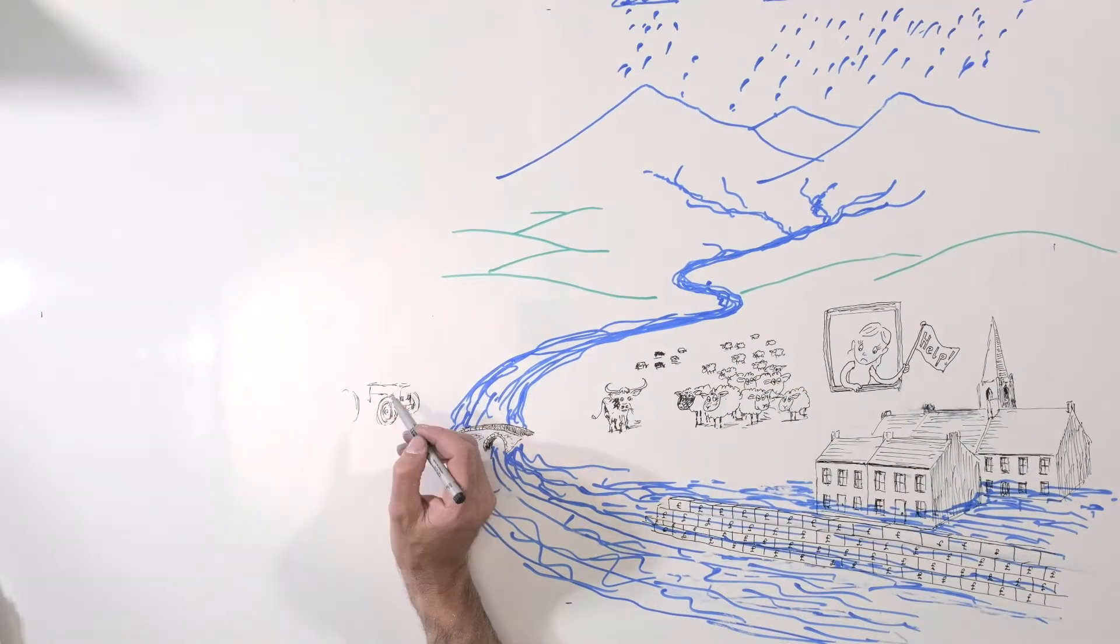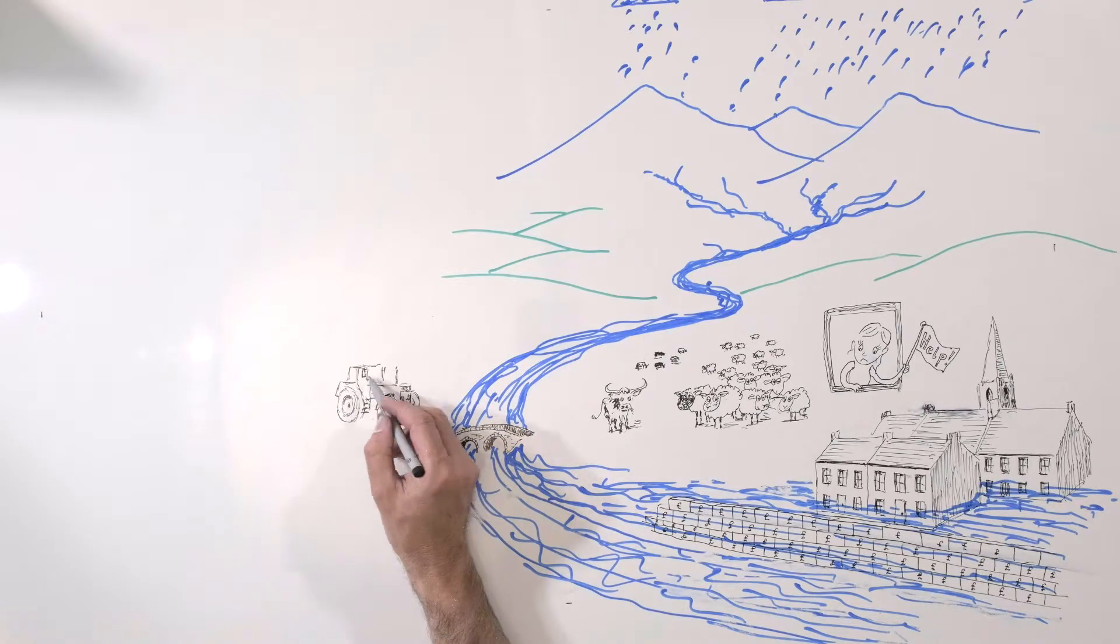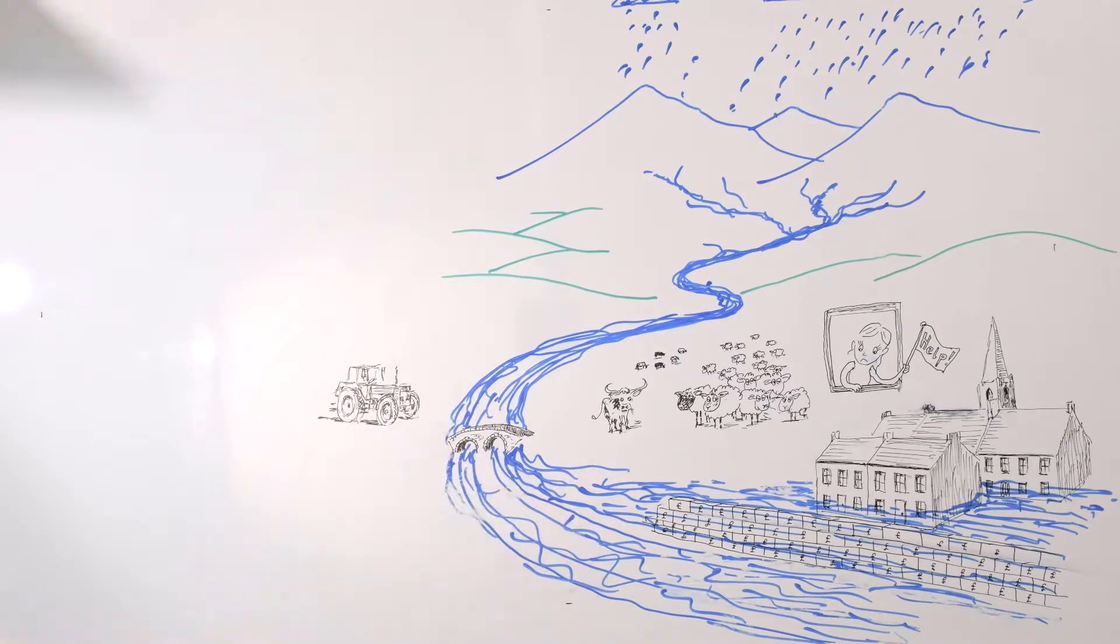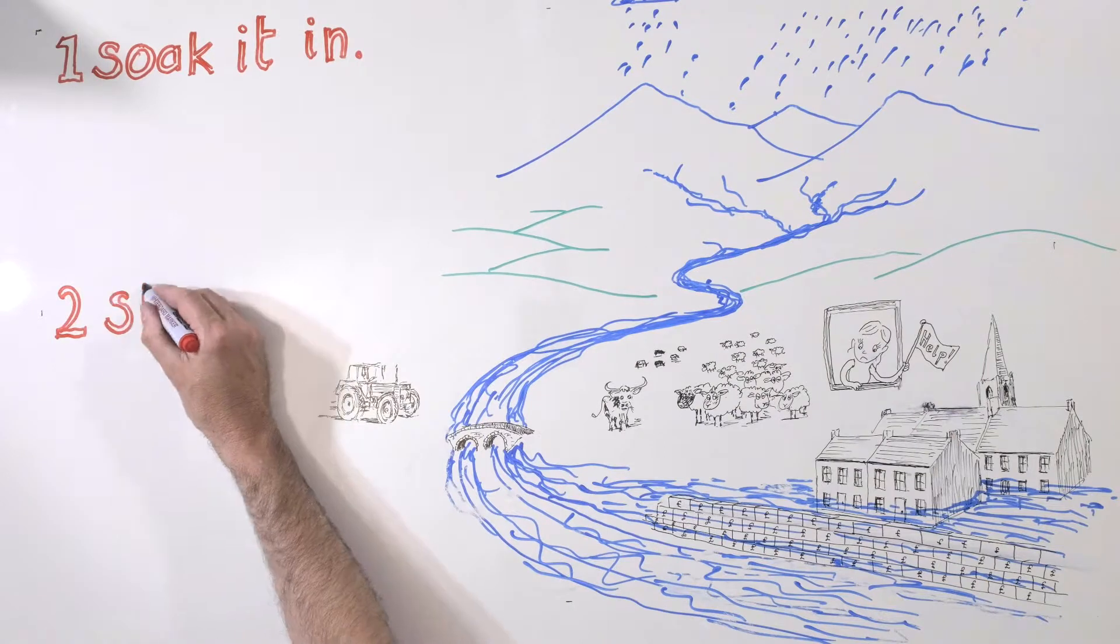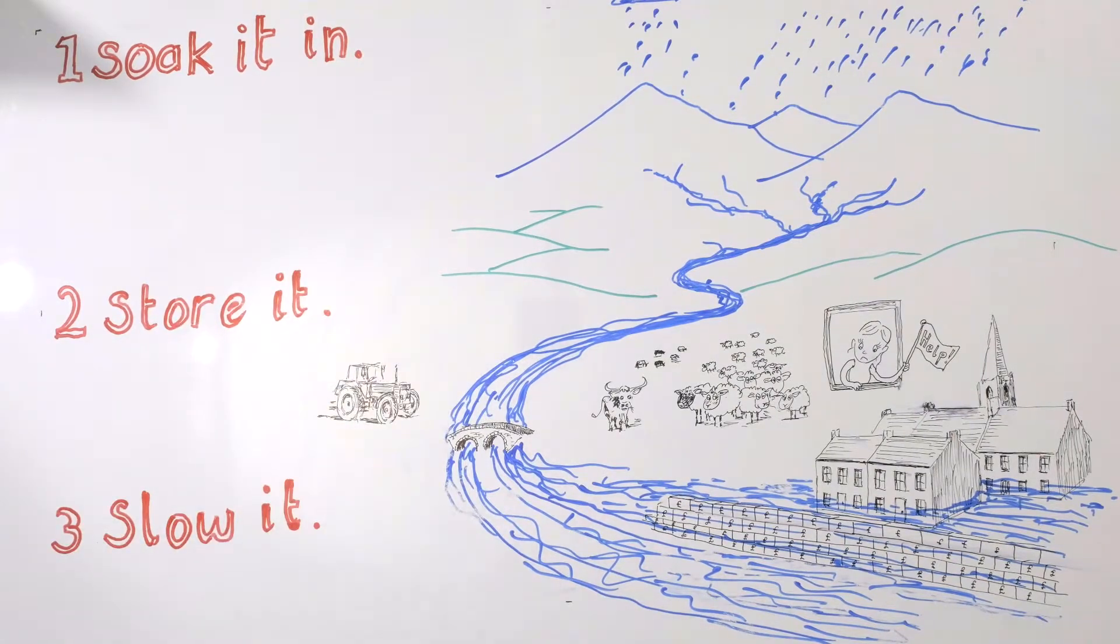We can improve the landscape in three main ways: by letting the rain soak into the soil rather than running off, by storing the water in the landscape, and by slowing the flow in small channels.